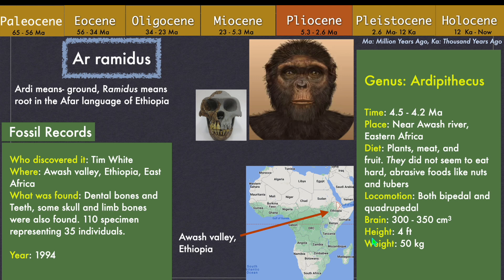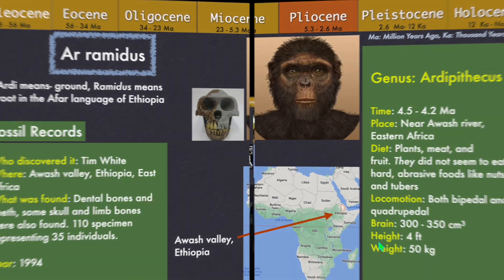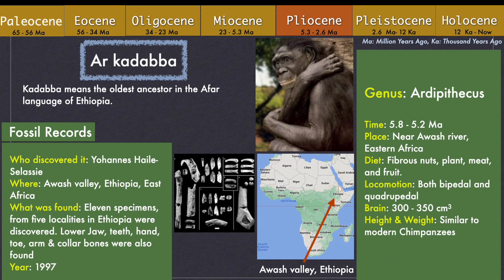Ardipithecus ramidus lived between 4.5 and 4.2 million years ago, with a height of 4 feet and weight of approximately 50 kg. It was a plant, fruit and meat eater, and its dentition indicates it did not eat hard abrasive food like nuts and tubers. It practiced both bipedal and quadrupedal locomotion and had a small brain of 300 to 350 cubic centimeters. In 1997, paleoanthropologist Johannes Haile-Selassie discovered more Ardipithecus fossils in the same Awash Valley — teeth, lower jaw, hand, toe, arm and collar bones. Though similar to Ardipithecus ramidus, there were some differences, and these fossils belonged to ancient humans living 700,000 years earlier.